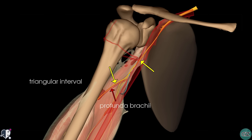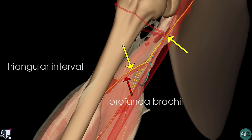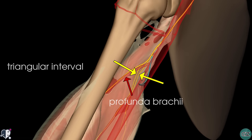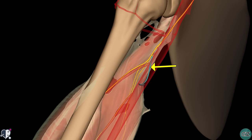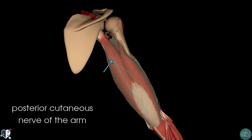Before doing so, it gives rise to branches which supply the medial and long heads of the triceps muscle. In addition, it also gives rise to a sensory branch — the posterior cutaneous nerve of the arm — which supplies the skin on the posterior surface of the upper arm. You can see this nerve highlighted here in blue as it curves around posteriorly to provide this sensory innervation.